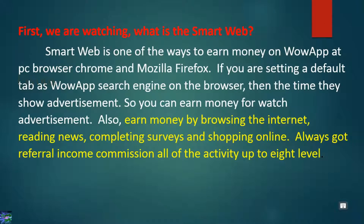First, we are watching what is Smart Web. Smart Web is one of the ways to earn money on web app at PC browser Chrome and Mozilla Firefox. If you set a default tab as the web app search engine on the browser, they will show advertisements so you can earn money for watching advertisements. Also earn money by browsing the internet, reading news, completing surveys, and shopping online. You always get referral income commission on all activity up to 8 levels.